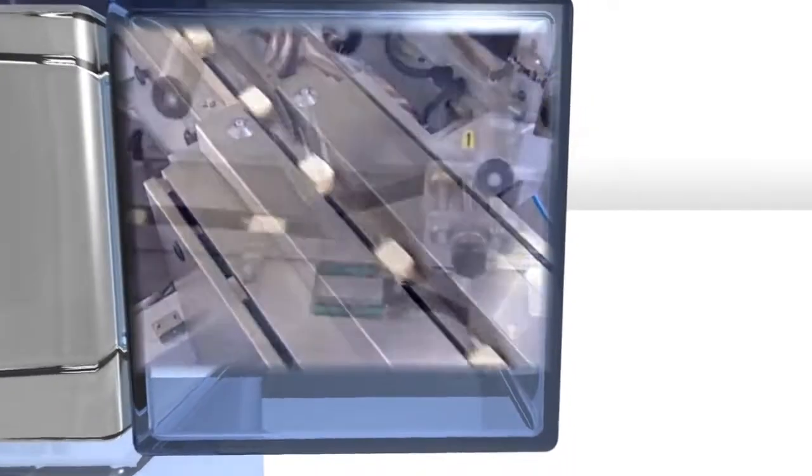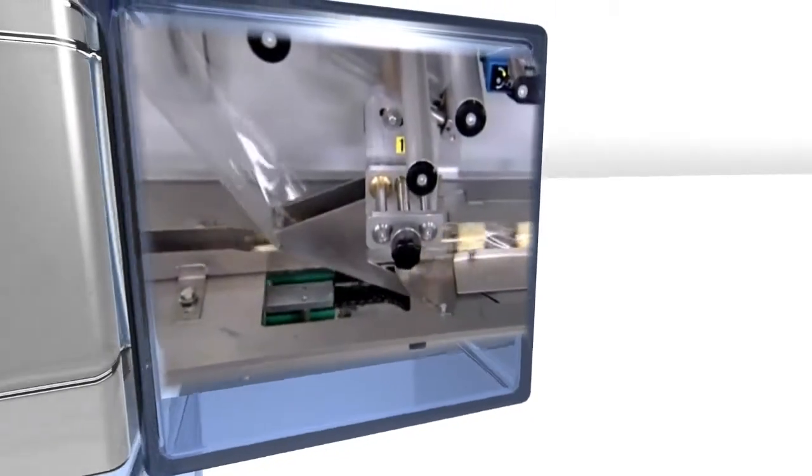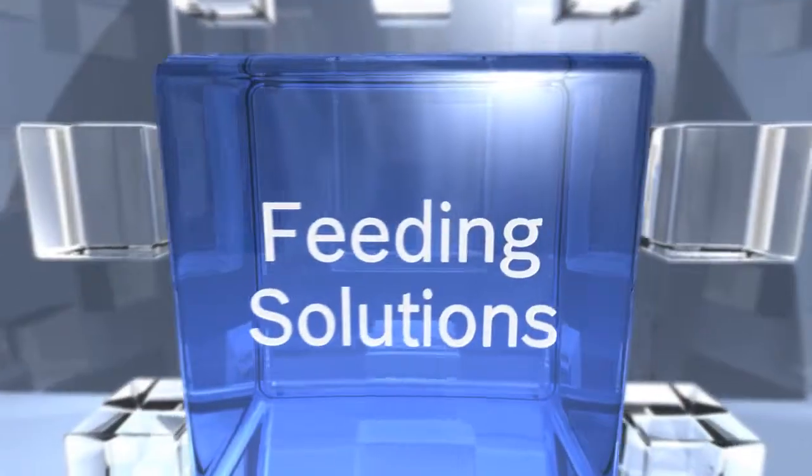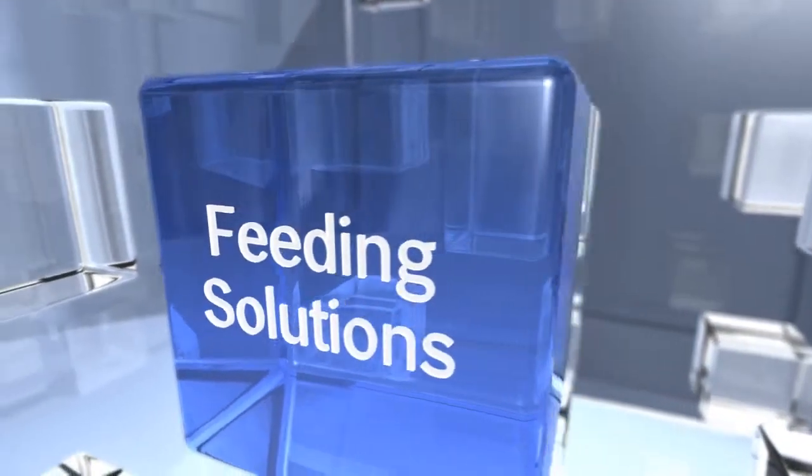In the case of horizontal form fill and seal machines, you can choose from a variety of modular feeding solutions. Our product portfolio ranges from manual feeding concepts to fully automated solutions with non-contact feeding.